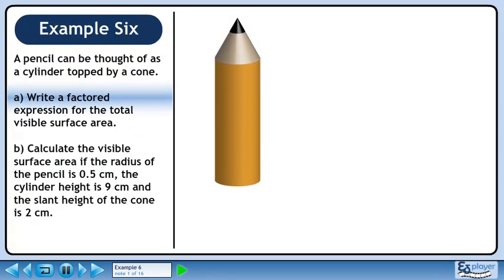A pencil can be thought of as a cylinder topped by a cone. In Part A, we will write a factored expression for the total surface area.